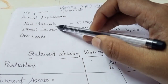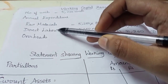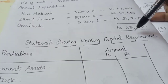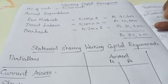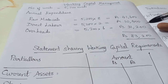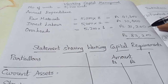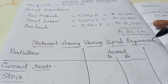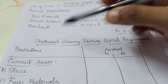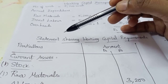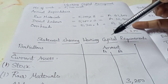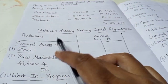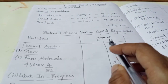The total annual expenditure is 41,600 plus 10,400 plus 31,200, giving a total value of 83,200. Now what we will do next is prepare the statement showing working capital requirements. This is the heading with a particulars column and an amount column.